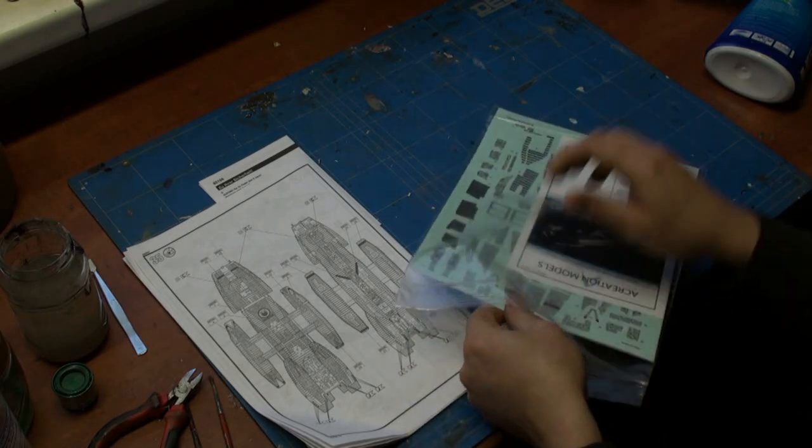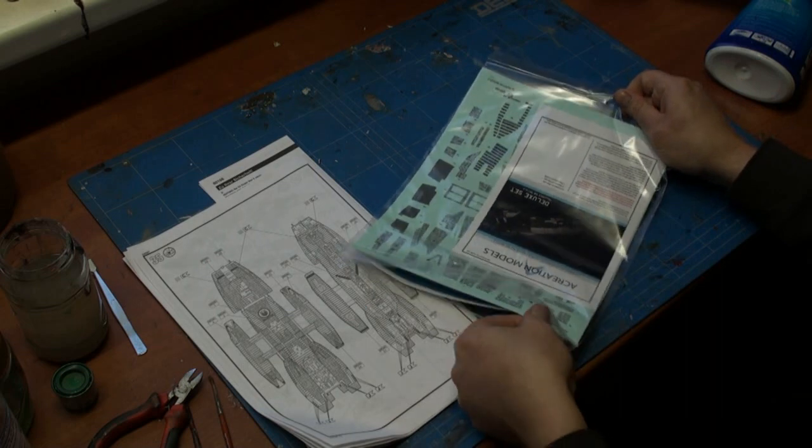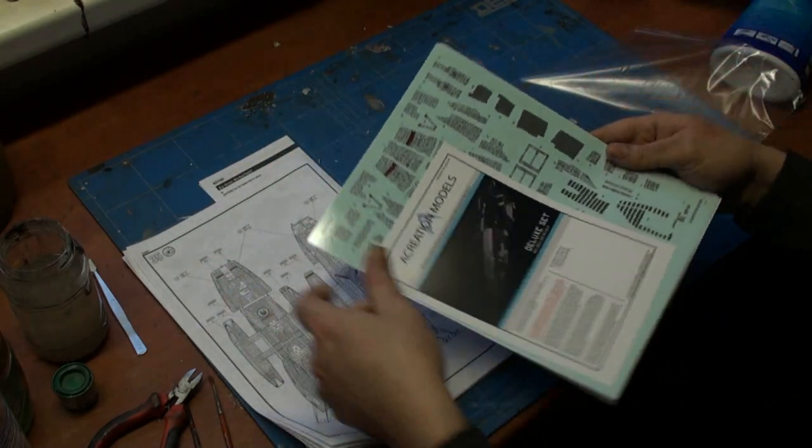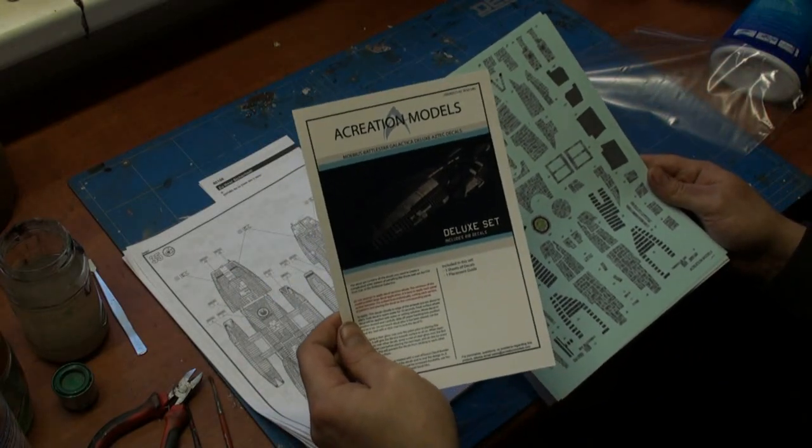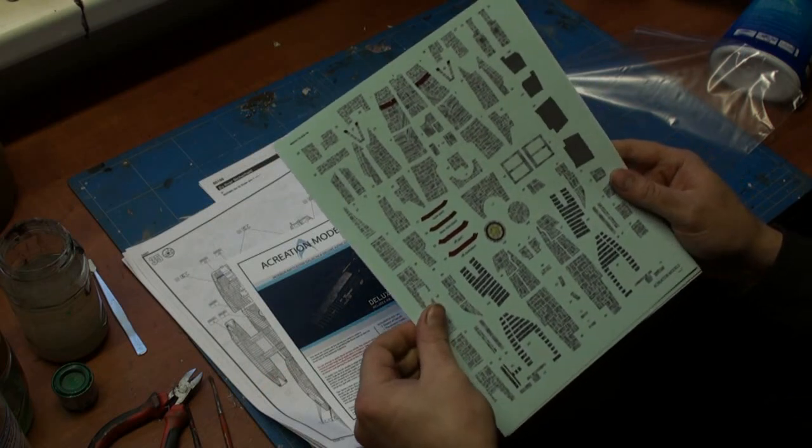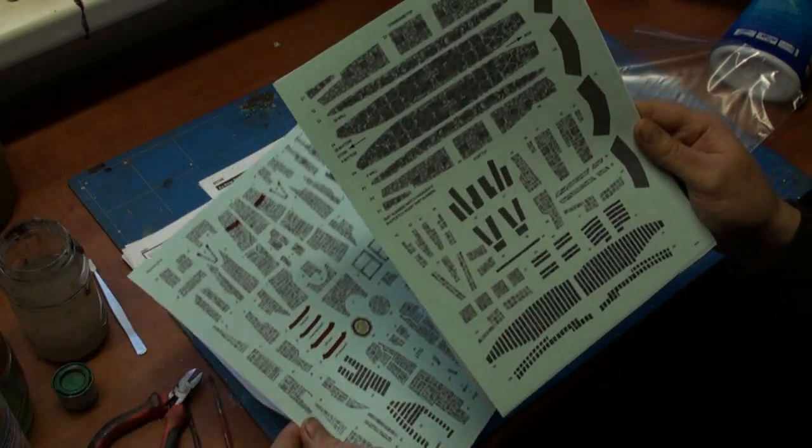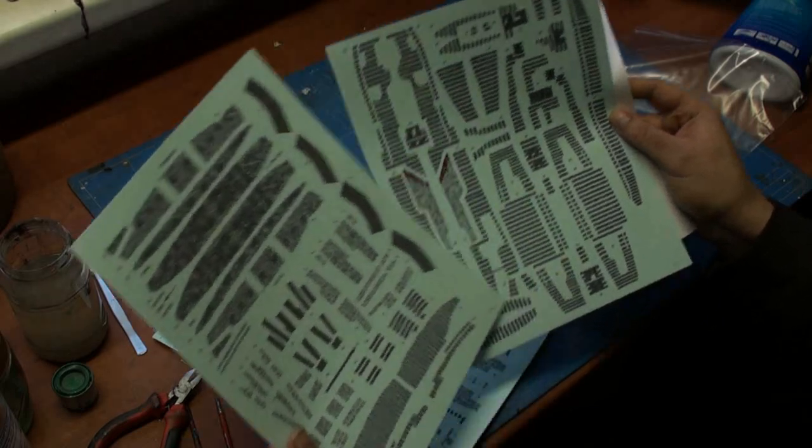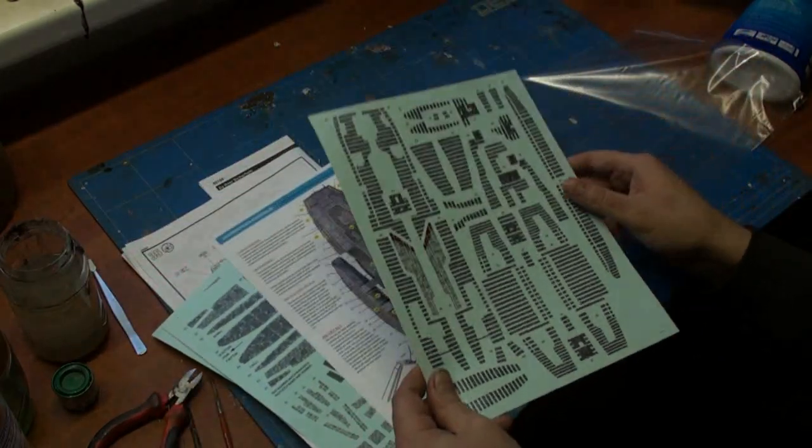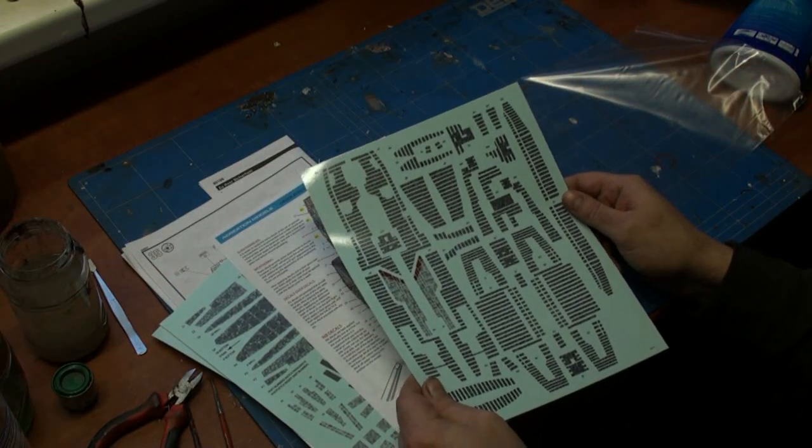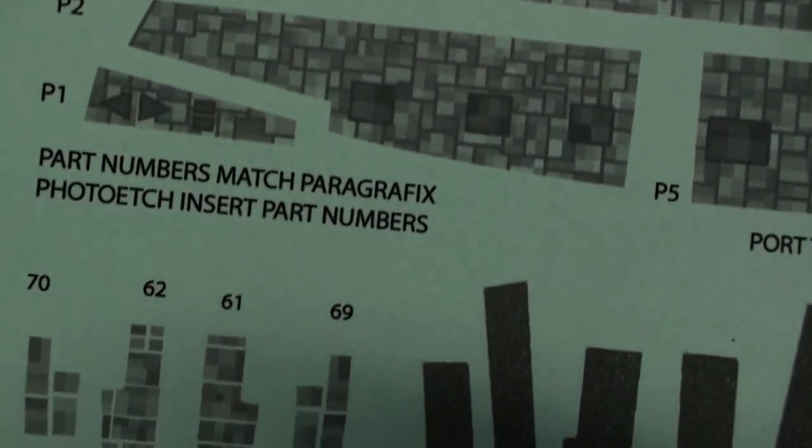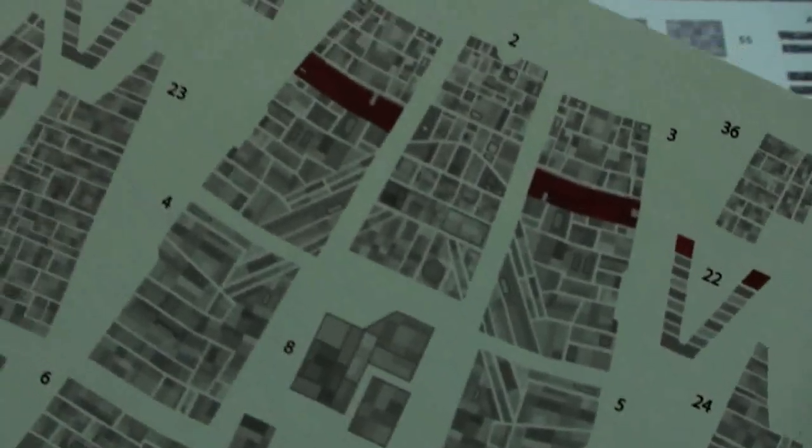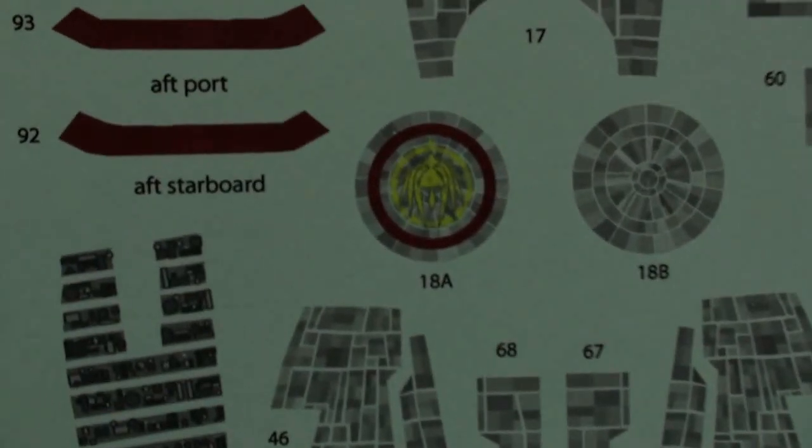It's a plastic bag containing three large pages of decals, a small booklet with instructions on how to install those decals. These look very complicated. We got decals for almost all the surfaces of the Galactica: landing bays, the main body, the head, engines. This is interesting—they also got decals for the landing bay when the landing bays are inserted in.